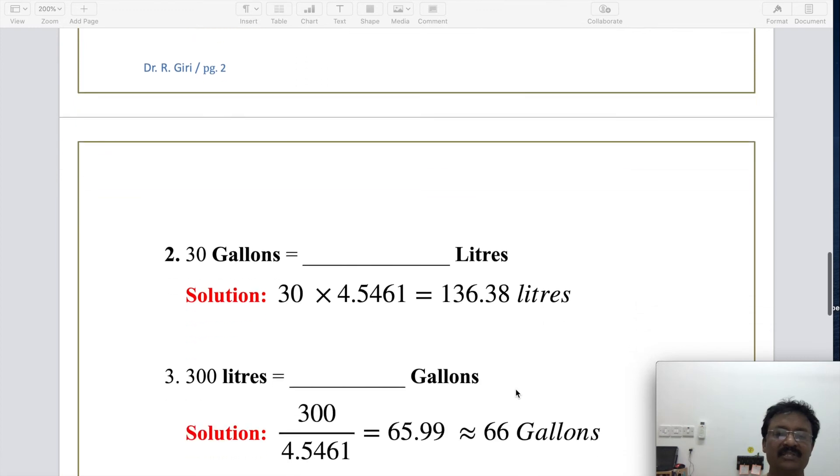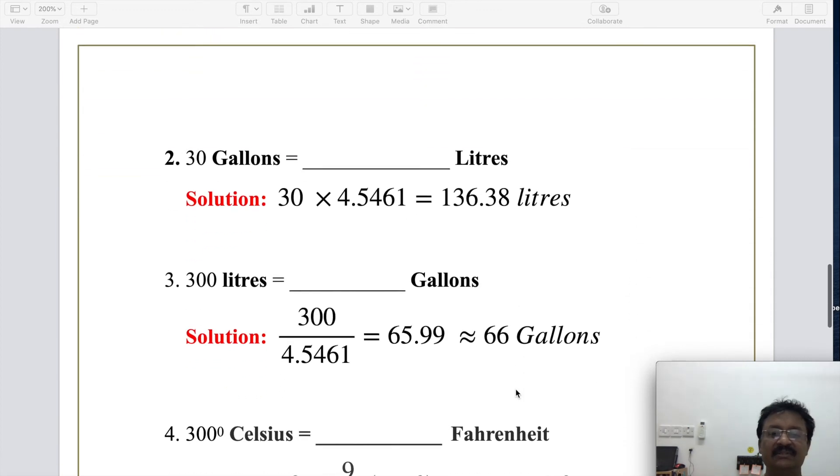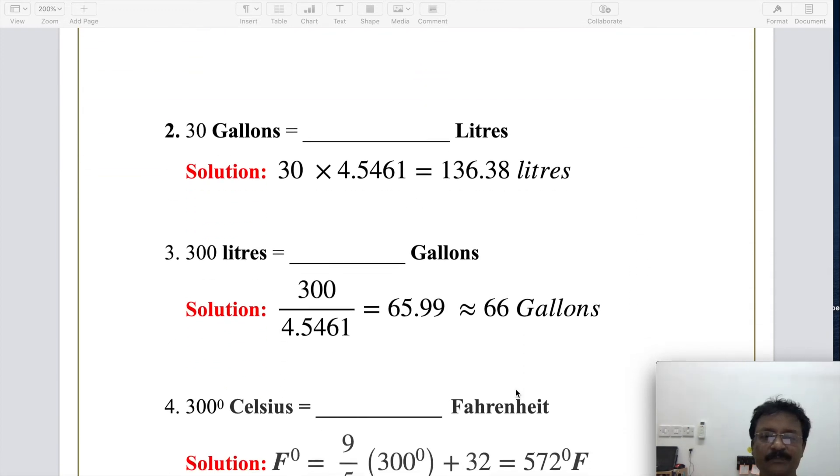300 liters. Now next is 300 liters, how to convert it into gallons. 300 divided by 4.5461, which equals 65.99, approximately 66 gallons. So 66 gallons is nothing but 300 liters.